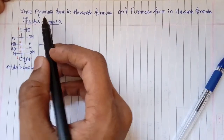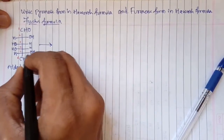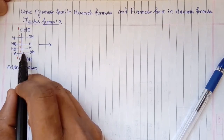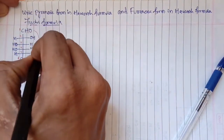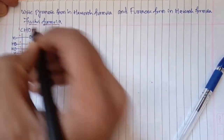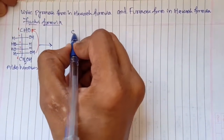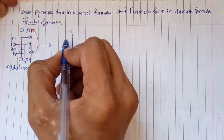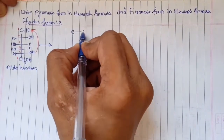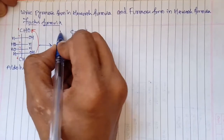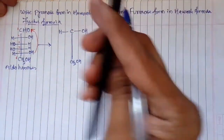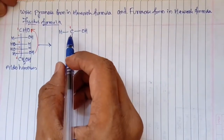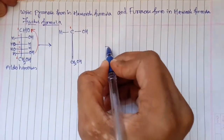If you want to make a pyranose, then the OH group of carbon number five should be attacking carbon number one. The OH group of carbon number five attacks carbon number one. When that happens, carbon number one will then have the OH group on the right hand side.